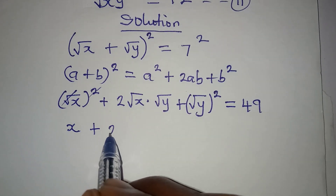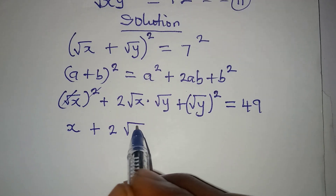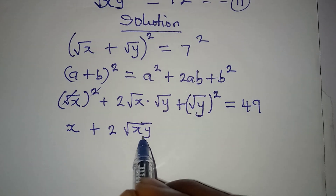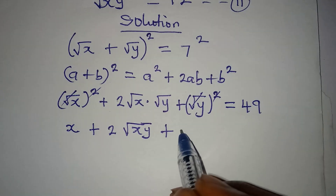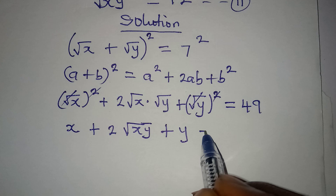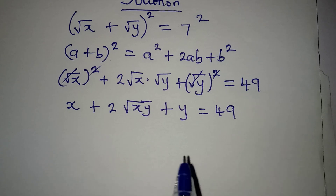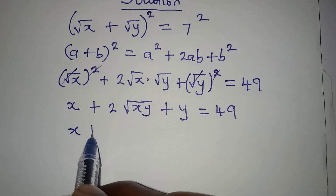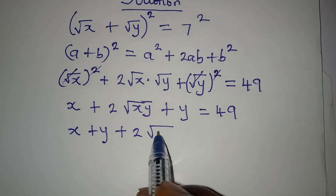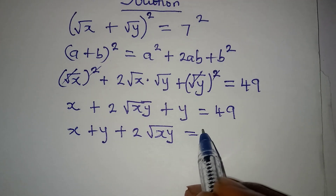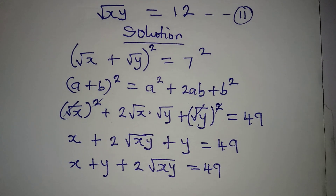Continuing, the square and square root cancel, so we have x, then plus 2 times root x times root y gives us square root of xy, then plus y, and the square root squared cancel, so we have y equal to 49. Rearranging: x plus y plus 2 square root of xy equals 49.